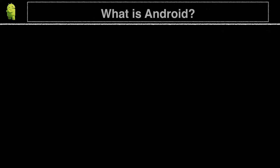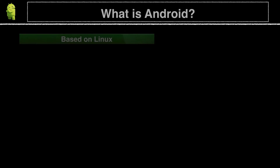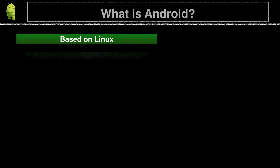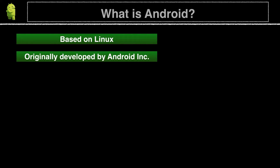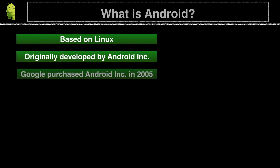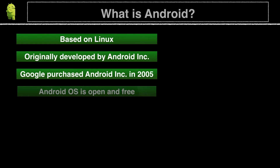So what is Android? Android is a mobile operating system that is based on a modified version of Linux. Android was originally developed by Android Incorporated. As part of Google's strategy to enter the mobile space, Google purchased Android in 2005. Google wanted the Android operating system to be open and free, so most of the Android code was released under the open-source Apache license.